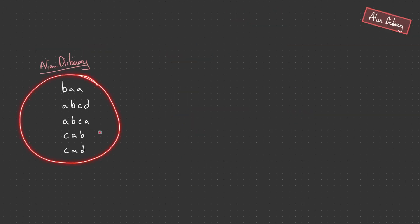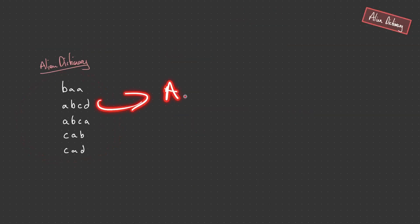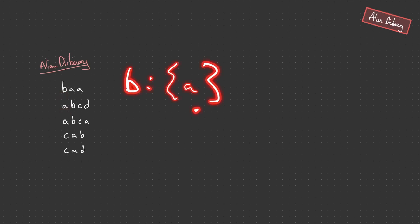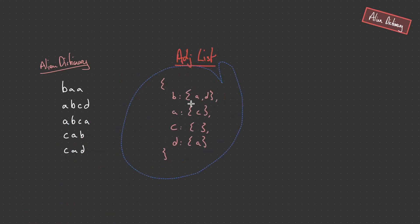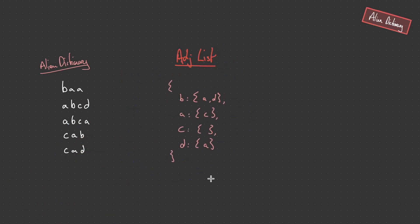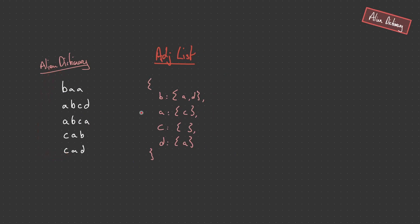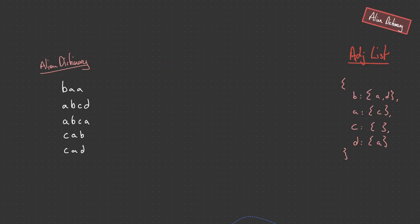So let's see how we can implement that. We have our dictionary and we're going to be creating a graph from it. To create a graph we usually have an adjacency list that we need to populate based on the characters and their dependencies. For example, we know that b comes before a, so b is going to be mapped to a as one of the dependencies. We can also see that b comes before d, so we include d as well. So at the end, our adjacency list is going to look like this — we loop over each word and each character and map it to its individual dependencies. So b must come before a and d, a must come before c, and d must come before a. c however doesn't have any dependencies. Once we've created the adjacency list we can look at implementing topological sort using depth-first search.